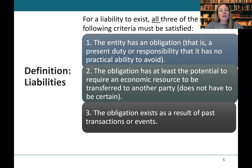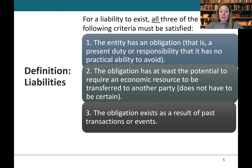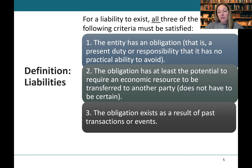Number two: the obligation has at least the potential to require an economic resource to be transferred to another party. We say 'at least the potential' because, for example, with a lawsuit, you may win or lose — you don't know if it's going to require the transfer of economic resources. So uncertainty around a lawsuit doesn't prevent it from being classified as a liability. We will learn more about that when we talk about contingencies later in this chapter.